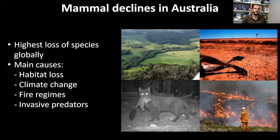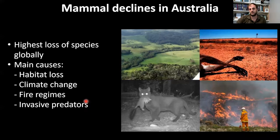Australia doesn't score highly on any of those factors, so you wouldn't expect mammalian declines to be a big problem. However, within Australia we believe there are four main causes: habitat loss, climate change, altered fire regimes, and invasive predators — and unfortunately these factors all interact synergistically with one another.